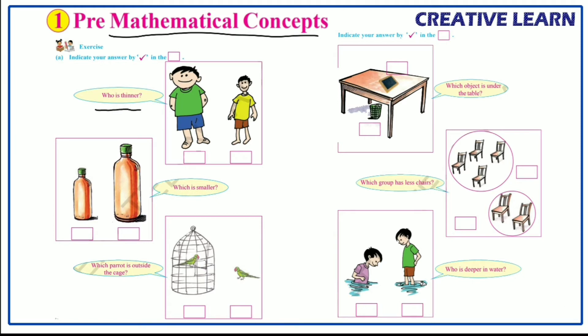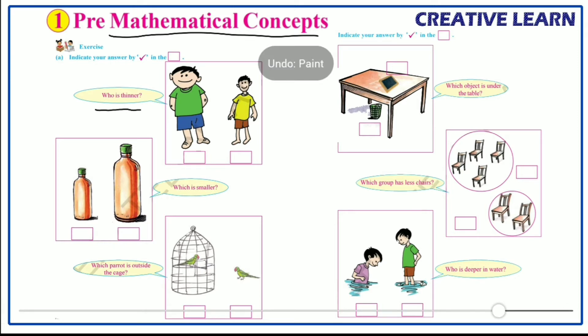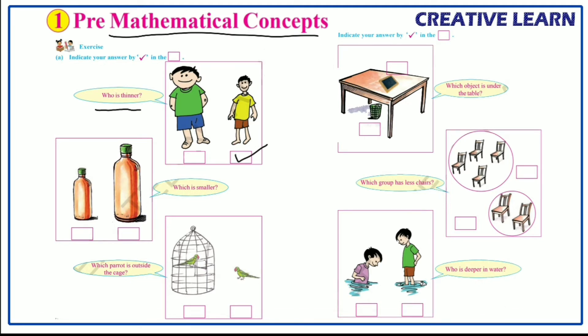The question is: who is thinner? Here two boys are standing. From these two boys, who is thinner? We have to indicate the answer. This boy seems to be thinner compared to the other boy, so we keep the right mark here. Now the second question: which is smaller?